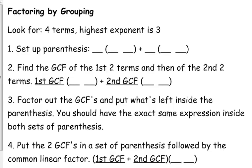Now you're going to have different GCFs for the first pair versus the second pair. You're going to factor those out and then put what's left inside the parentheses. Here's the ticker. You should have the exact same expression inside of the parentheses. If it's not, then either your GCF is incorrect, you didn't factor out the GCF correctly, or you can't factor it.